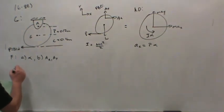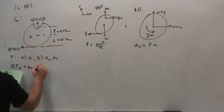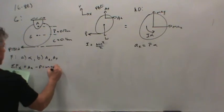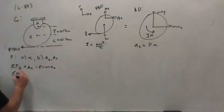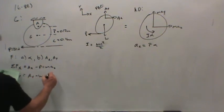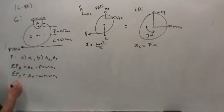Let's start by summing forces. Sum forces in the x direction: Ax minus P equals m acceleration in the x direction. Summing forces in the y direction: Ay minus weight equals mass times acceleration in the y direction.